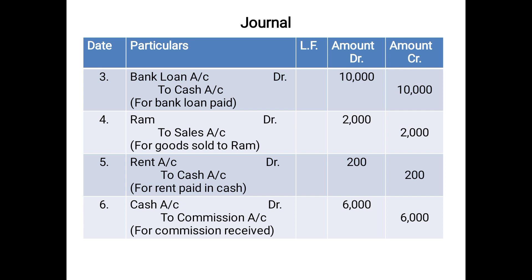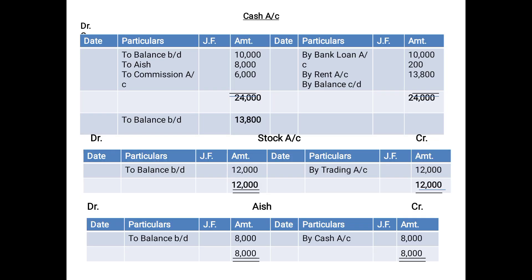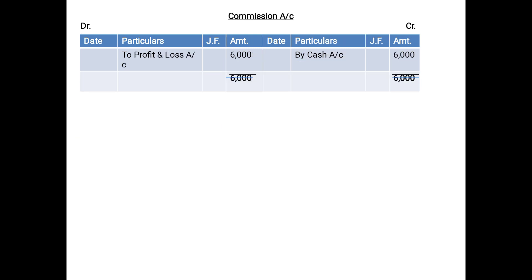The last entry is Cash Account debited, To Commission Account 6,000. In Cash Account, you record the credit aspect — Commission is being credited — so it will be posted on the debit side as 'To Commission Account 6,000'. In the Commission Account, you record the cash aspect — Cash is being debited in the entry — so it will be posted on the credit side as 'By Cash Account 6,000'.